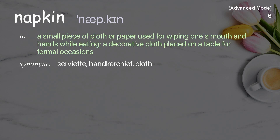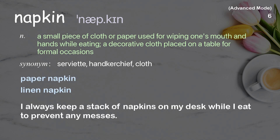Napkin. A small piece of cloth or paper used for wiping one's mouth and hands while eating. Also, a decorative cloth placed on a table for formal occasions. Examples: paper napkin, linen napkin. I always keep a stack of napkins on my desk while I eat to prevent any messes.